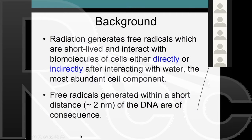By way of background, radiation generates free radicals—chemical species which are short-lived and damage cells either directly, or indirectly if they interact with water. After all, water is the most abundant component of the cell. Since radiation interacts in a probabilistic, random way, it has the highest probability of interacting with water.